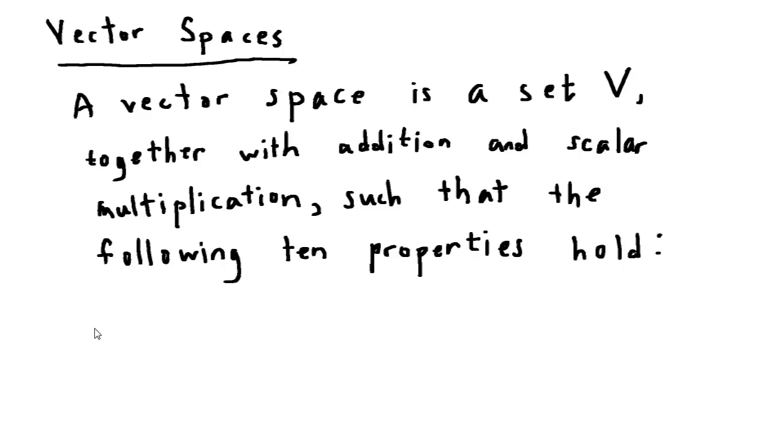In this section we're going to look at vector spaces. A vector space is a set V together with addition and scalar multiplication such that the following ten properties hold.